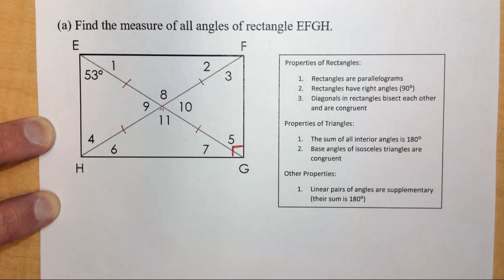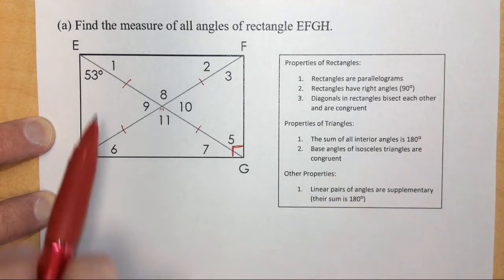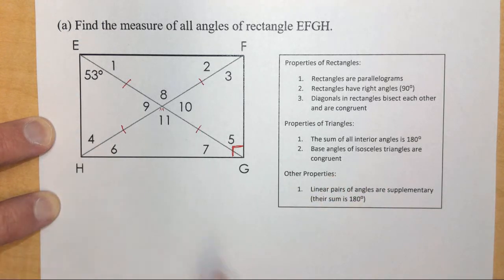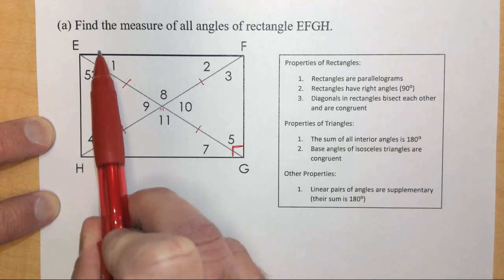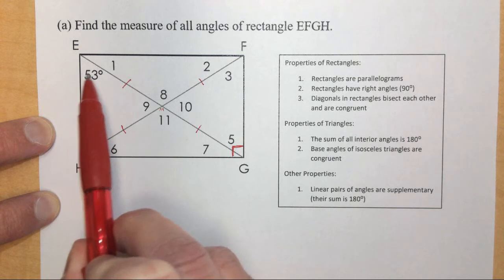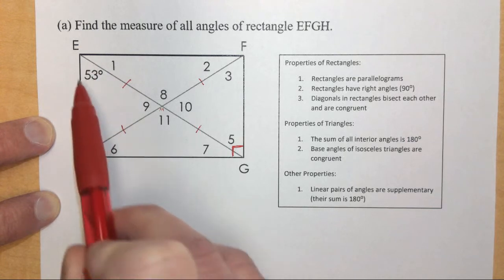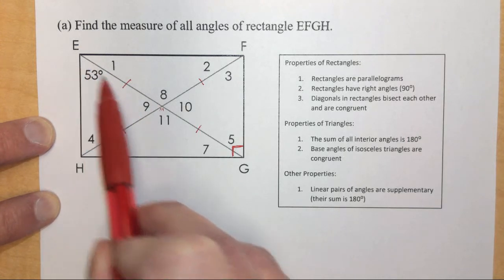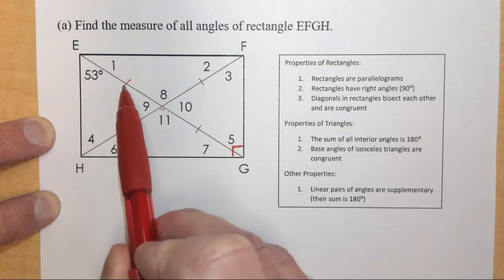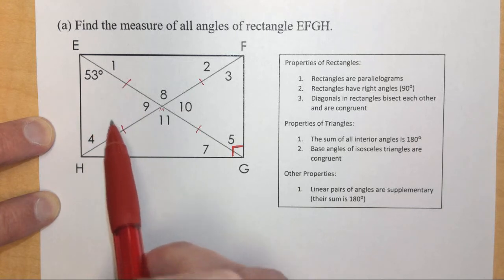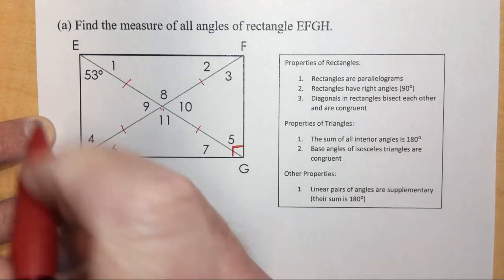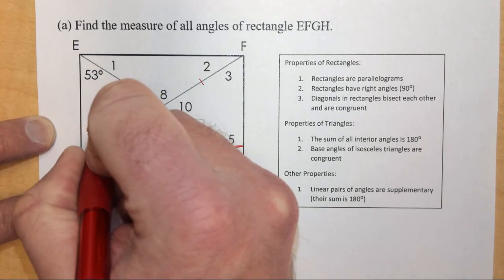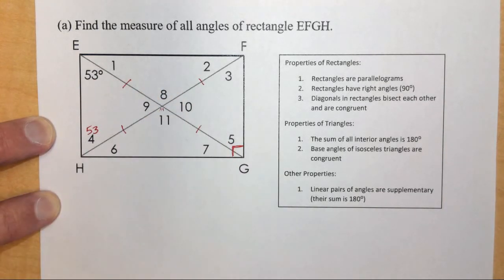I'm going to use the isosceles triangle rule first. The given measurement of 53 degrees is part of the full 90-degree corner angle. In this isosceles triangle on the left, the angles opposite the congruent sides must be congruent, so since this angle is 53 degrees, angle 4 also has to be 53 degrees.